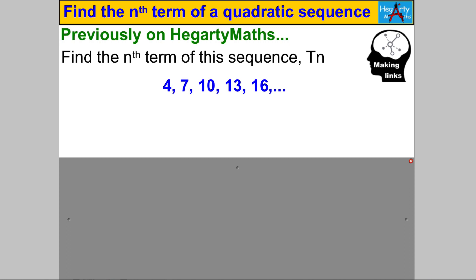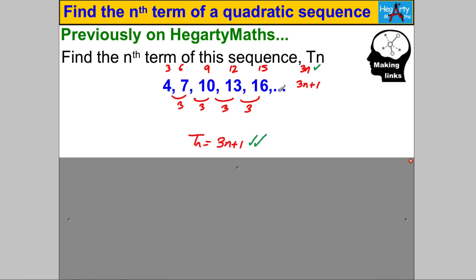Pause the video and double check you can remember how to do that. You should have realised that this linear sequence was going up by a common difference of 3, and you use that in order to get the nth term: 3n + 1. If you're not sure about that, you must go back to your building blocks.